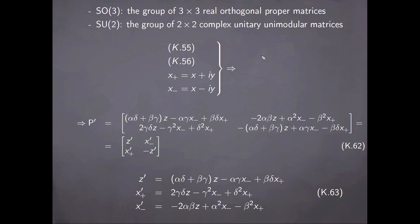In the language of group theory, we say that the three-dimensional real orthogonal proper matrices form what is known as the special orthogonal group in three dimensions, and the two-dimensional complex unitary unimodular matrices form the special unitary group in two dimensions.